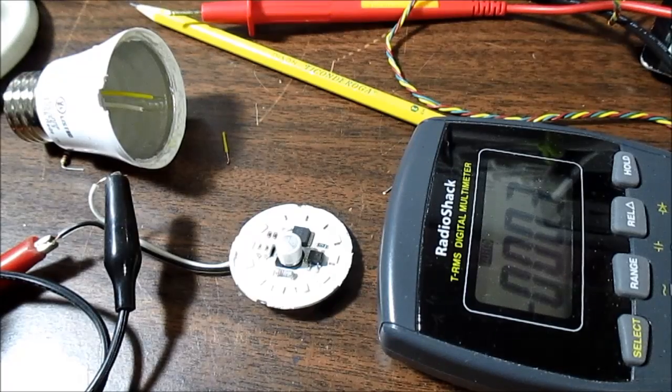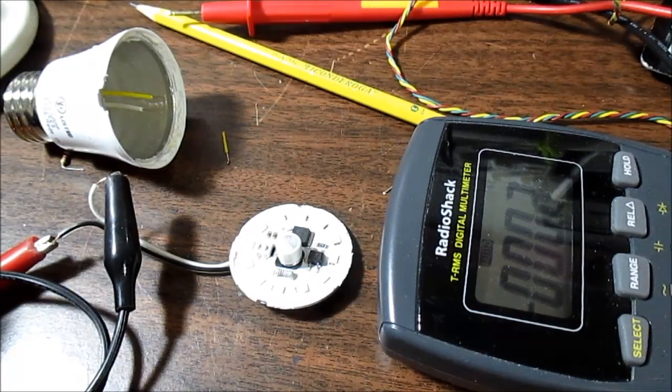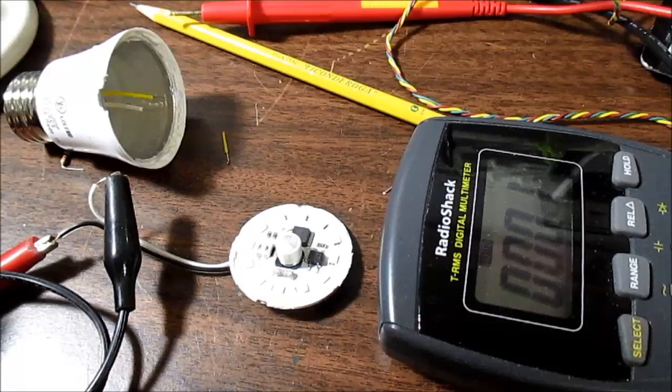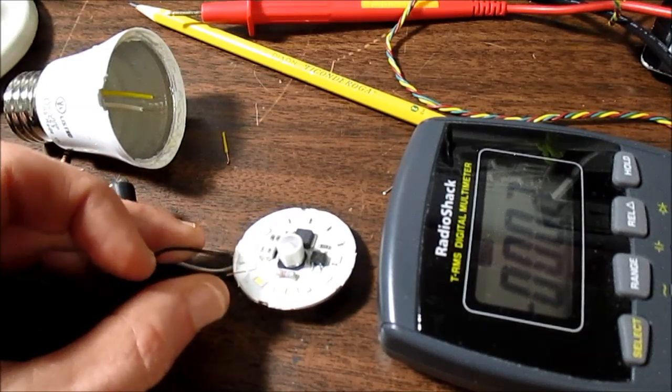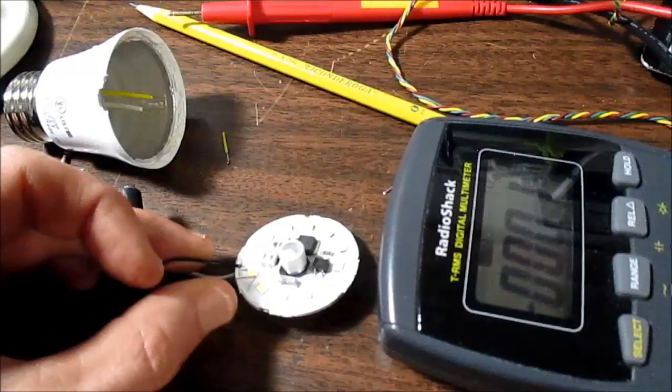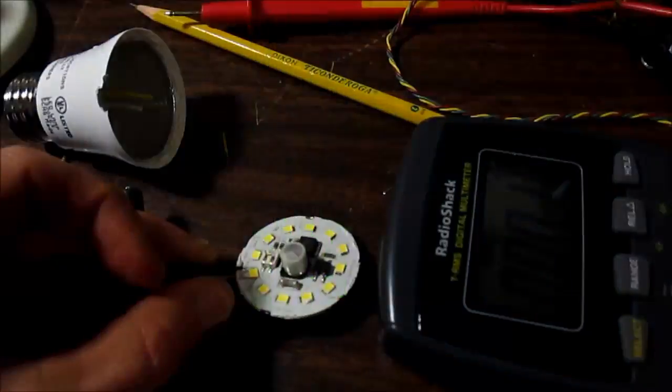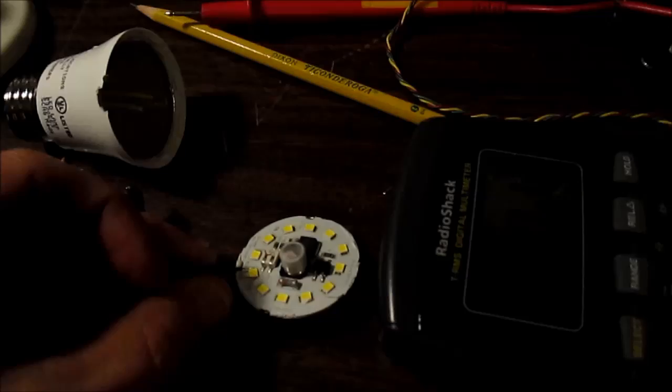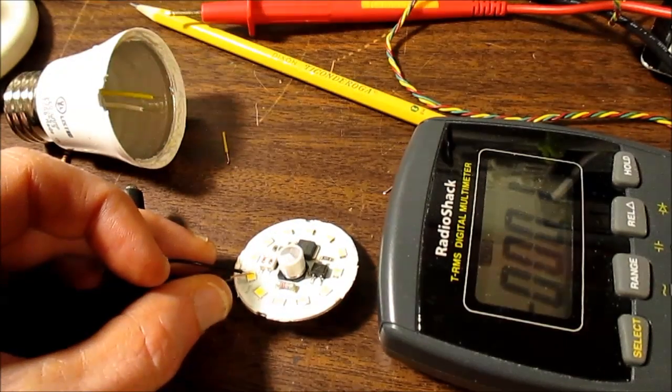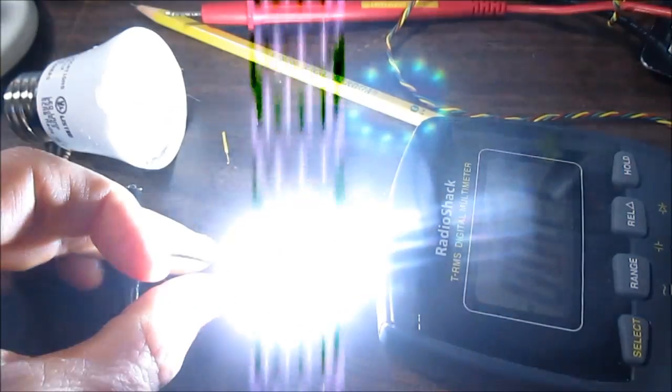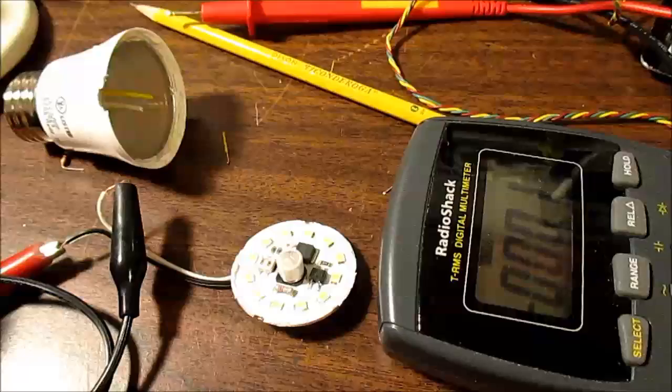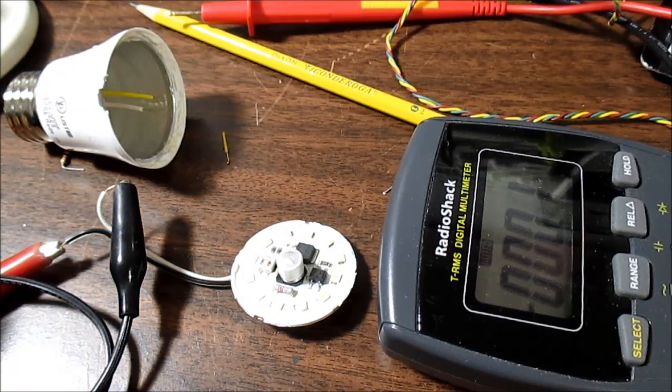So let's see if bypassing that LED that measured open will make this thing turn on. Okay, here goes. Ooh, yep. That's what it was. That LED right here is open. Try that again if I can get that on there. Yep. So that is the problem.